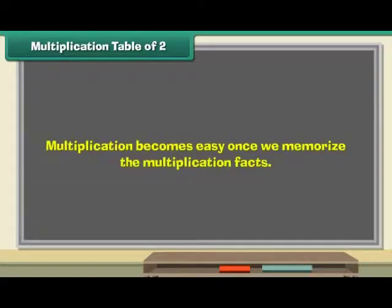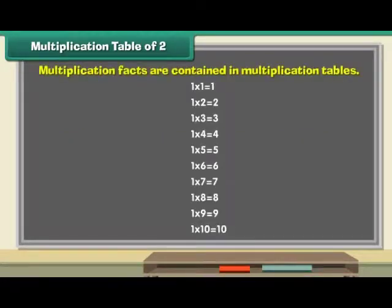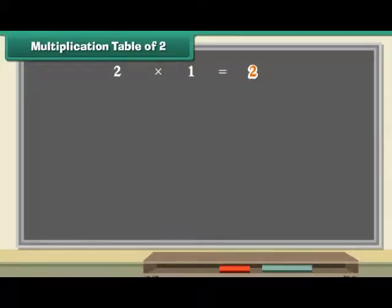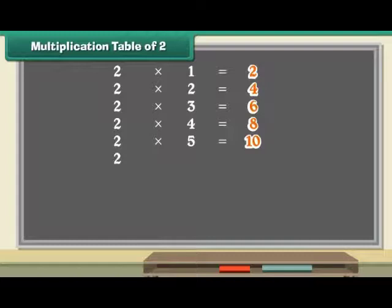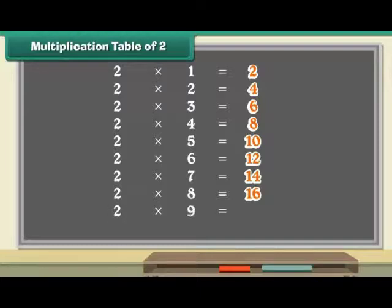Multiplication table of 2. Multiplication becomes easy once we memorize the multiplication facts. Multiplication facts are contained in multiplication tables. Let us start with a multiplication table of 2. 2 ones are 2. 2 twos are 4. 2 threes are 6. 2 fours are 8. 2 fives are 10. 2 sixes are 12. 2 sevens are 14. 2 eights are 16. 2 nines are 18. 2 tens are 20.